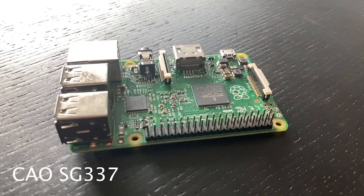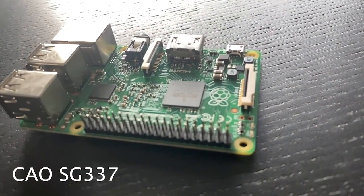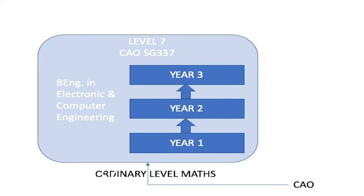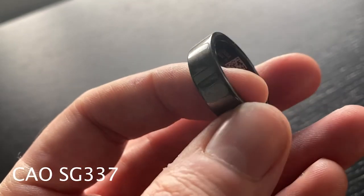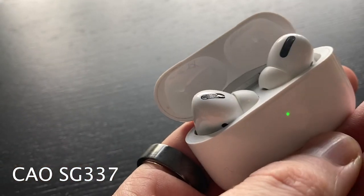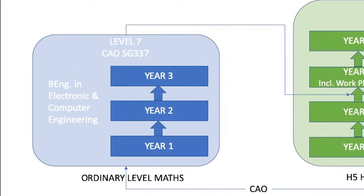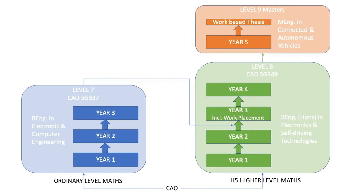If you are interested in technology or engineering, but are not doing higher level maths, why not consider our level seven in electronic and computer engineering? This is a three year program that looks at the design and development of embedded electronic systems. These are the medical devices that keep us healthy, the consumer devices that keep us entertained, or the controlled systems that keep us safe on the road. You can then progress onto the level eight in electronics and self-driving technologies, and from there to the masters. Check out the link below for more information.